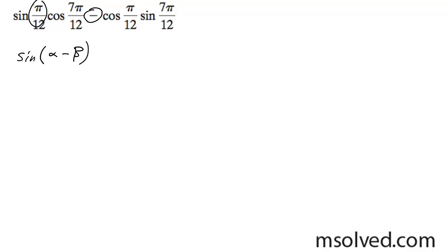And our alpha and beta are, one of them here is our pi over 12 and our 7 pi over 12.